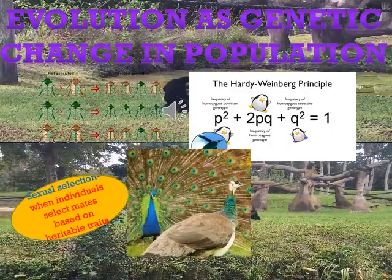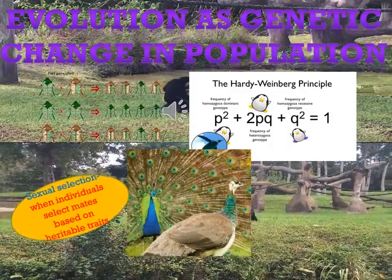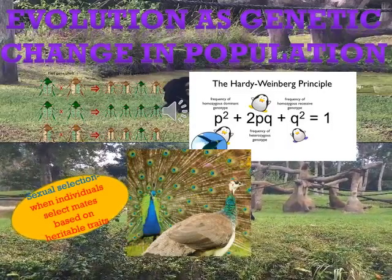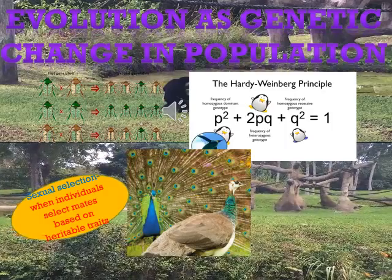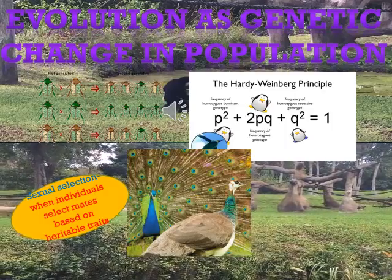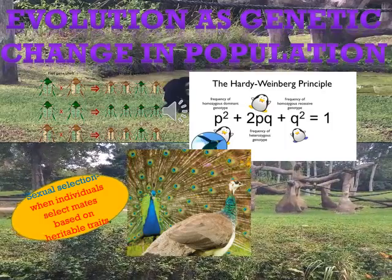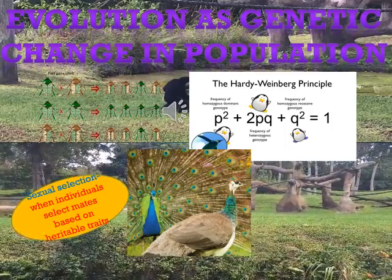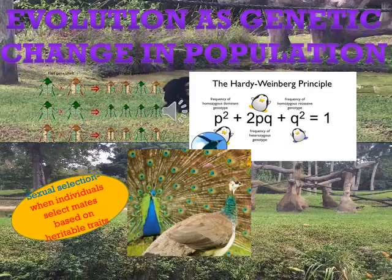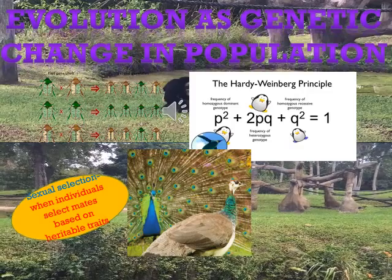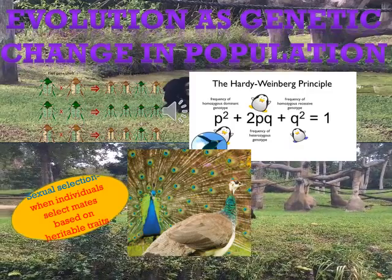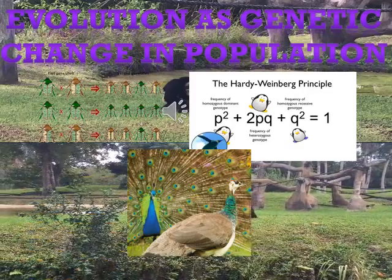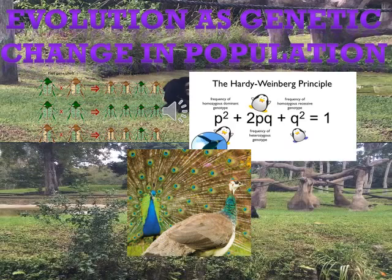For genetic equilibrium, individuals must mate with other individuals at random. But in many species, individuals select mates based on a heritable trait such as size, strength, or coloration — a practice known as sexual selection.